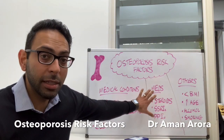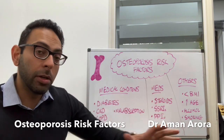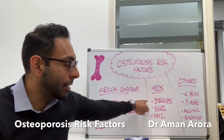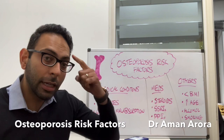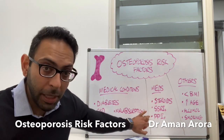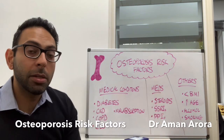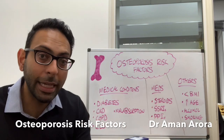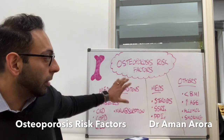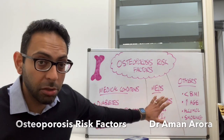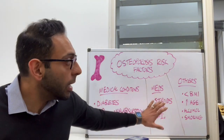Lots of medications can lead to osteoporosis as well. Steroids is the one we tend to think about first, but also things like SSRIs, things like PPIs. So think about what people could be taking based on their past medical history and their drug history.